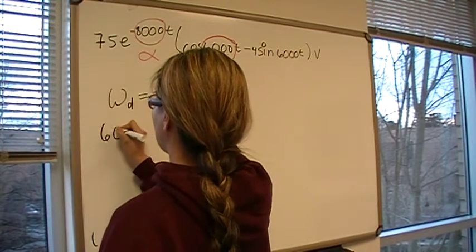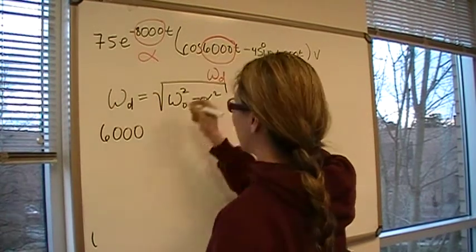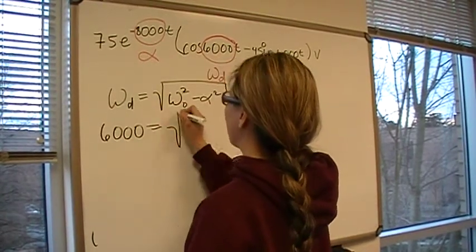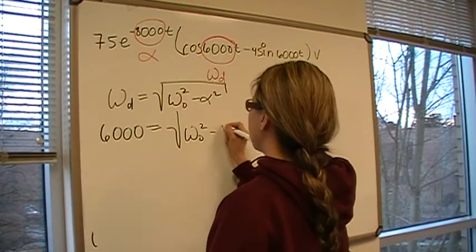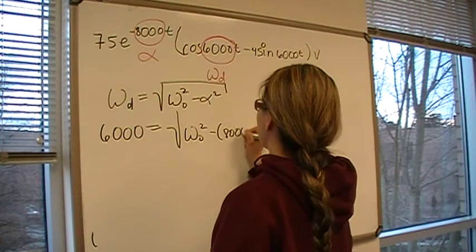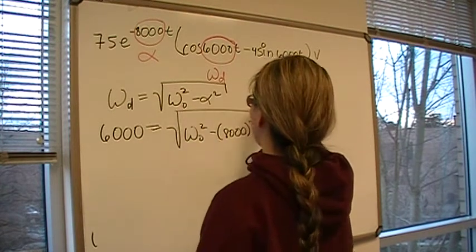We know that omega D is going to be 6,000 from there, and that's going to equal the square root of omega 0 squared, whatever that is, minus 8,000 squared.